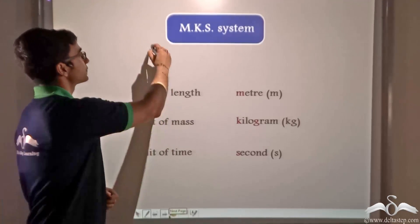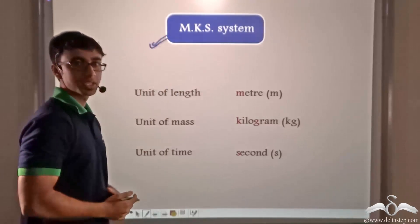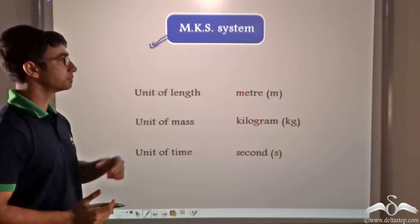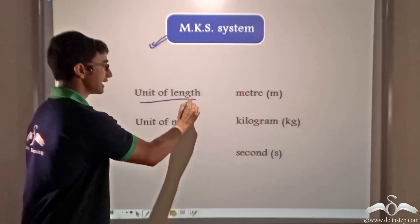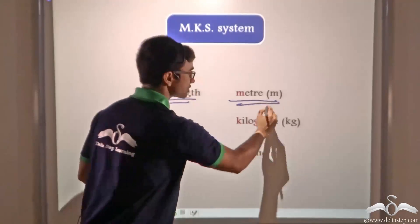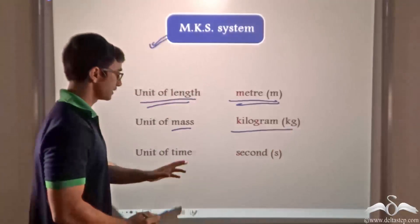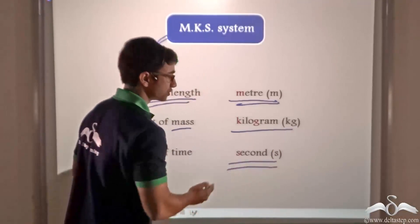That system is known as the MKS system. So keeping in mind the previous difficulties, the MKS system proposed that for measuring length, meters should be used, for measuring mass, kilograms should be used and for measuring time, seconds should be used.